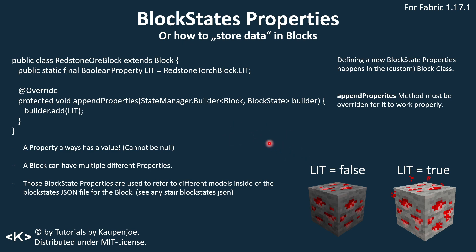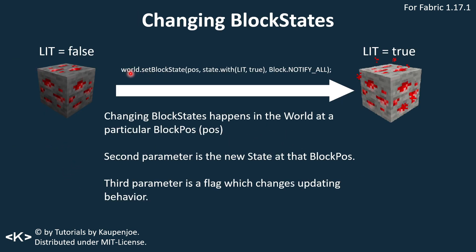You change block states by calling world — so you need to be somewhere where you have access to the world variable. Then we call setBlockState with a particular position. This changes the block state; it happens in the world — usually the server world. The first parameter is the position, the second is the new state at that block position, and the third parameter is a flag which changes updating behavior. Usually you want Block.NOTIFY_ALL, which notifies all neighbors and updates everything.